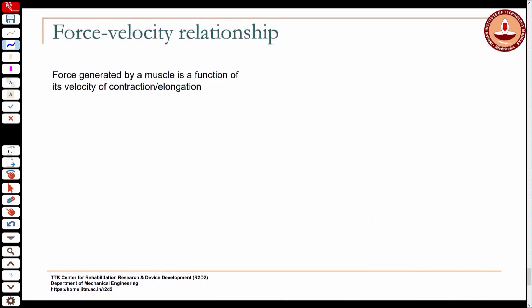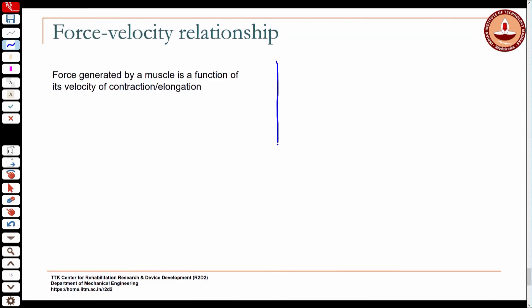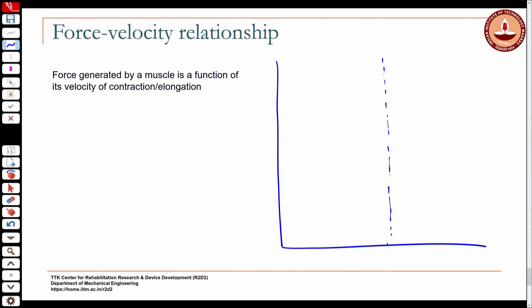Now that we know the difference between these types of actions, let us look at the force-velocity relationship for a muscle. You know how the filaments slide against each other and the cross bridges are formed — that is influenced by the velocity at which a muscle contracts. If velocity equals zero, that is an isometric action.